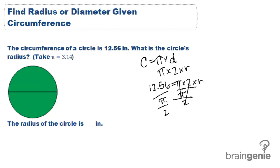So 12.56 divided by pi divided by 2 would get us our radius. And when we solve it all out, we get a radius of 2 inches.